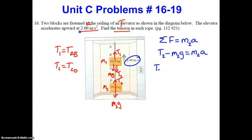Substitute: T2 minus 10 times 9.8 equals 10 times 2. Solve this algebraically. Pause the video if you need a moment. And you should get 118 newtons. So we have the tension in rope CD.